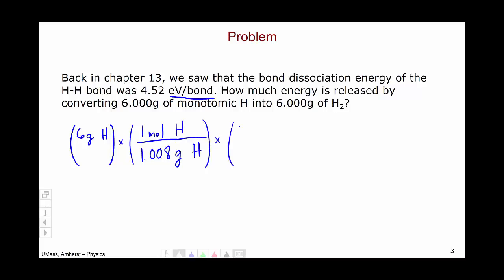We, of course, know that there are 6.022 times 10 to the 23rd atoms of hydrogen in a mole of hydrogen, which means we have, in our initial sample, 3.584 times 10 to the 24th hydrogen atoms.